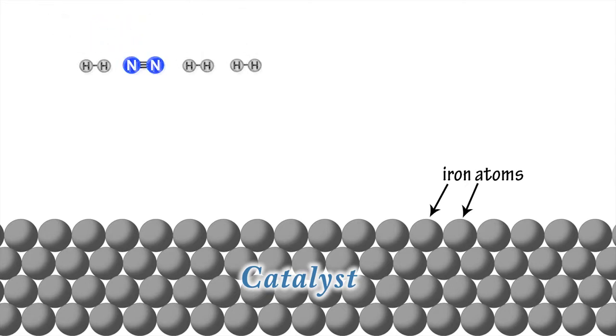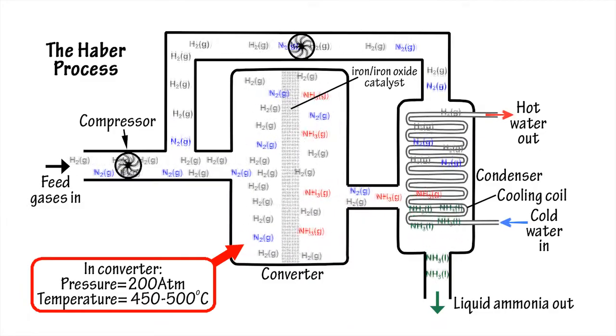Reactant molecules are adsorbed onto the surface of the catalyst, making it easier to break the bonds in hydrogen molecules and nitrogen molecules respectively, so that atoms of hydrogen can bond with nitrogen atoms to form molecules of ammonia.